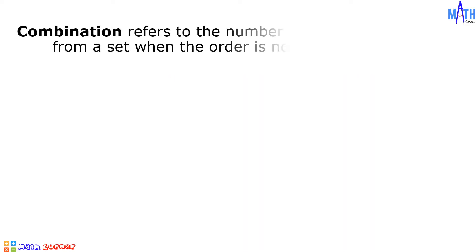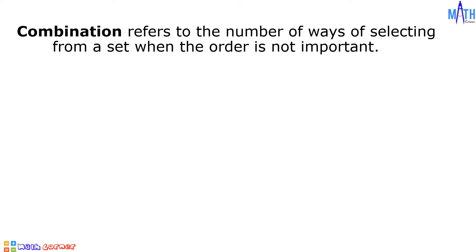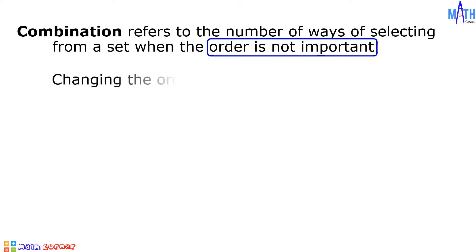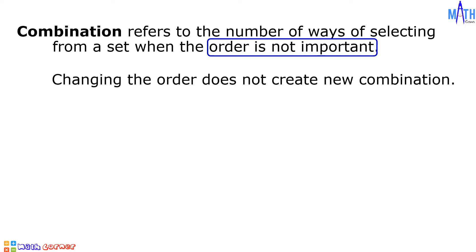Combination refers to the number of ways of selecting from a set when the order is not important. Again, the order is not important — changing the order does not create a new combination. For instance, A, B and B, A are considered one combination.